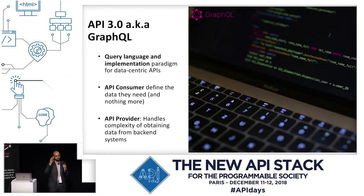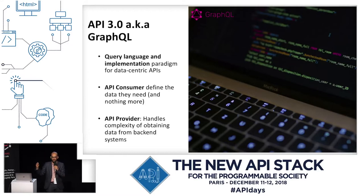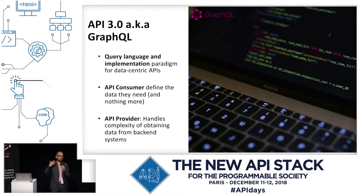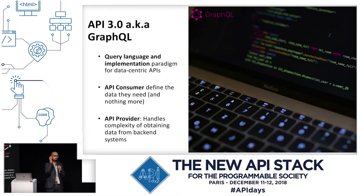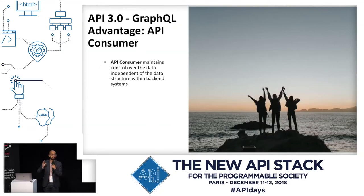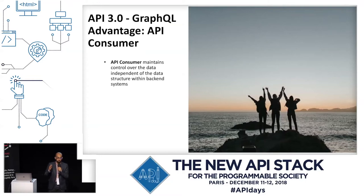What GraphQL has really done is shift some of the complexity from the frontend to the backend. It hasn't taken it away. If data exists in five different databases, GraphQL is a great platform to get you that information, but that doesn't take away from the fact that it's still complex on the backend. The frontend developer makes one call, gets exactly the data he needs, builds his UI, and life is good. The backend developer is dealing with resolvers and multiple service calls.